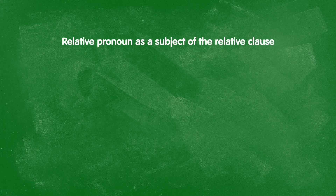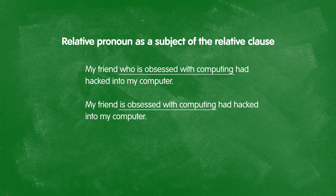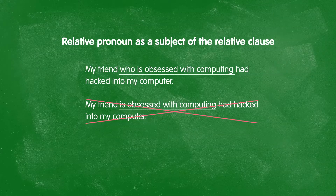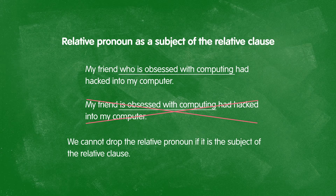Let's look at examples using 'who' and 'which.' If I say: my friend who is obsessed with computing had hacked into my computer — I cannot say: my friend is obsessed with computing had hacked into my computer. This is grammatically incorrect. Therefore, if the relative pronoun is either the subject or the object of the relative clause, it cannot be dropped.